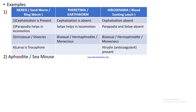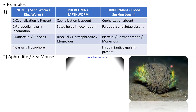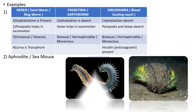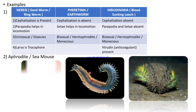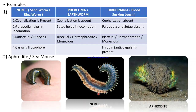Another example is Aphrodite, or sea mouse. This is Nereis or sandworm, and this is Hirudinaria, the blood-sucking leech.